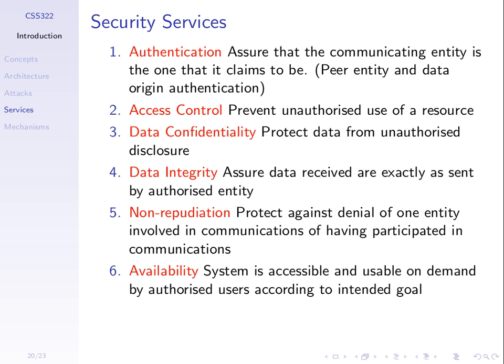These are the main services we look for in securing computer networks. We don't necessarily want all of them — it depends on the goal of our network. For example, sending an exam to the secretary requires confidentiality, data integrity, and authentication. The other services are less important for that application, but for other applications we'd choose different services.